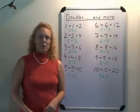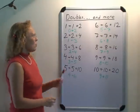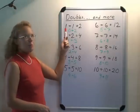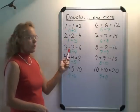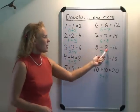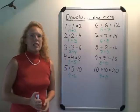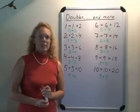Now let's look at doubles. The doubles are where you add the same number to itself. One plus one, two plus two, three plus three, eight plus eight, and so on. And most math books practice these.